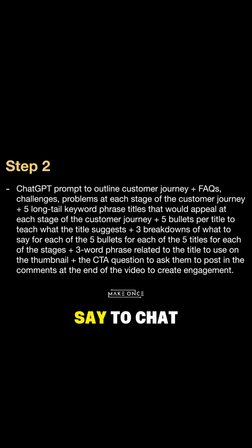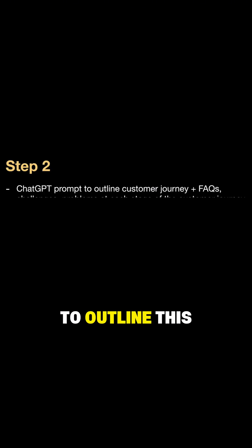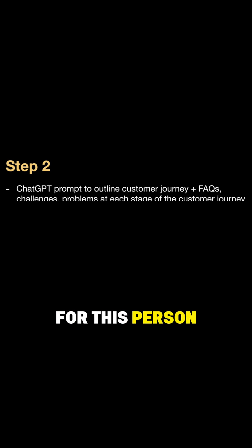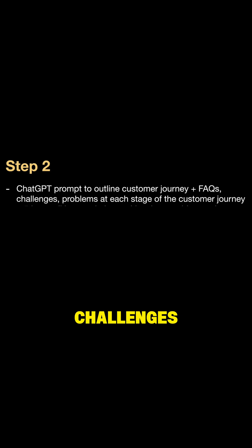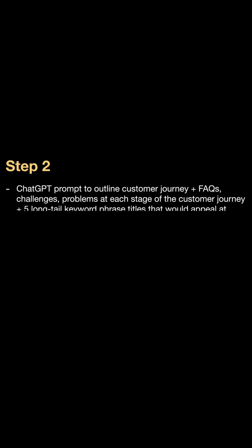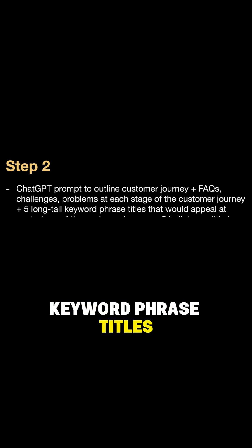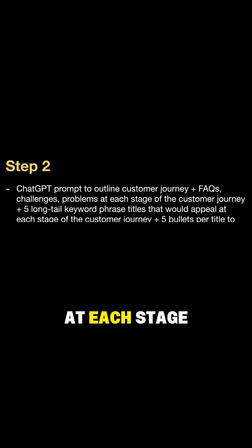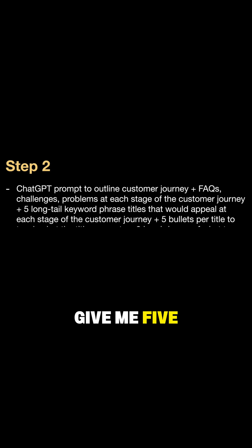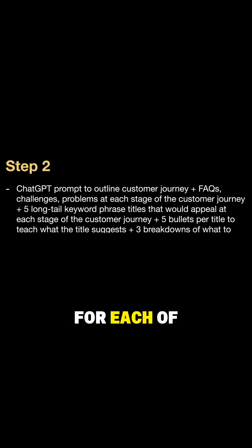In step two, you're going to say to ChatGPT: I need you to outline this particular customer journey for this person. I need to know their frequently asked questions, challenges, and problems at each stage of the customer journey. Plus, I need you to give me five long-tail keyword phrase titles that would appeal to this person at each stage of the customer journey.